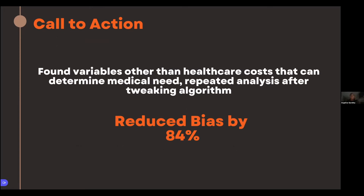As a call to action, researchers looked into this algorithm and found other variables beyond overall healthcare cost that can determine medical need. They repeated the analysis after tweaking the algorithm, and it reduced the bias by 84%. Before you get to the model deployment stage, it's very important to think about bias — because once you deploy that model, you're affecting millions, if not hundreds of millions or billions of humans.